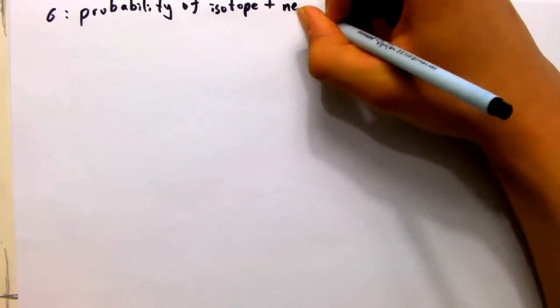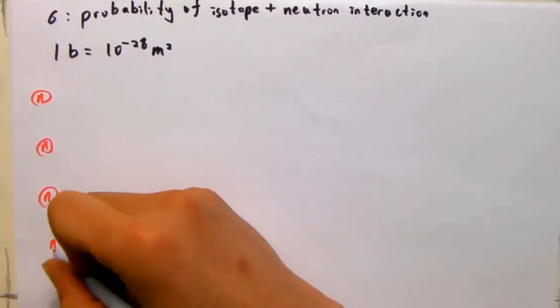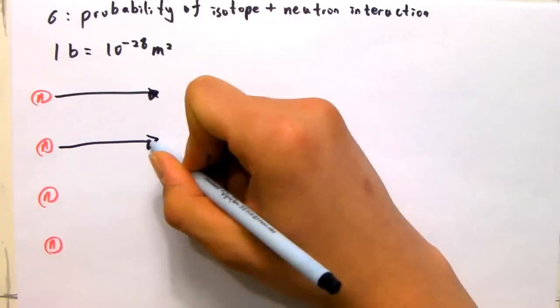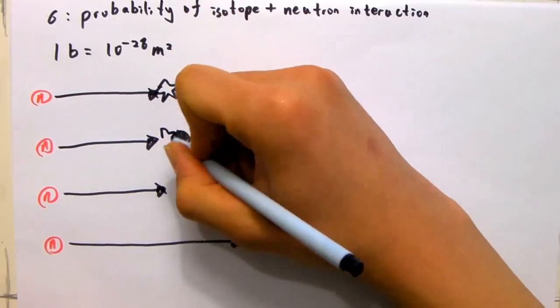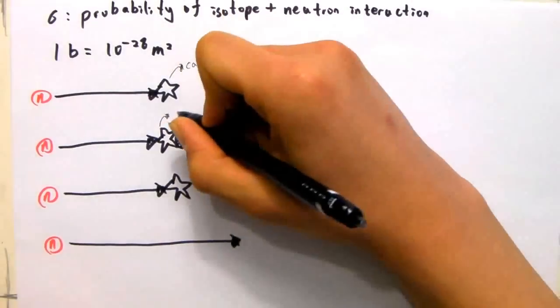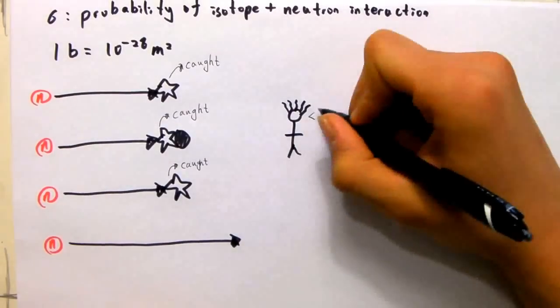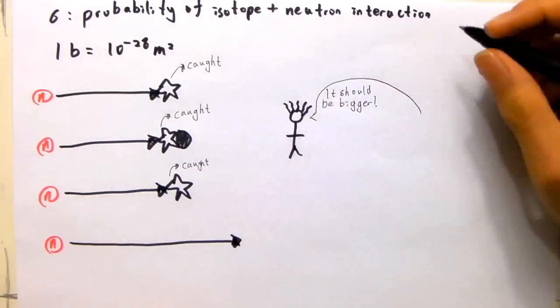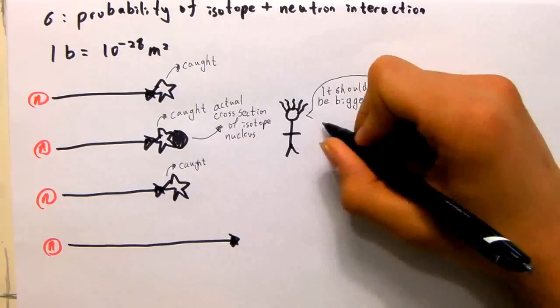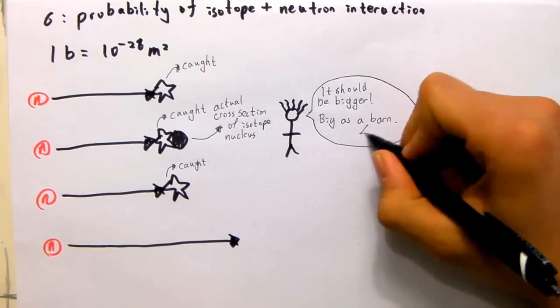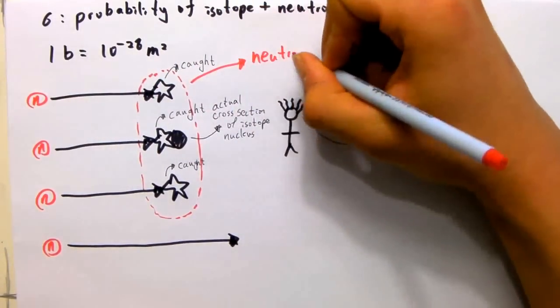The neutron cross sections of an isotope represents the probability of an isotope interacting with the neutron. It is in the units barns, and one barn is equal to 10 to the power of minus 28 m². It is basically how large the cross section of the nucleus should be, for the number of neutrons interacted with to be true. It has nothing to do with the actual size of the nucleus. The term barn came about when a physicist working on radioactivity found that according to the size of the neutron, and the number of neutrons that were captured or interacted by a uranium atom, the cross section of the uranium atom should be as big as a barn.